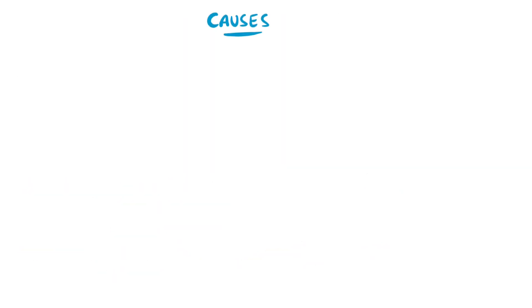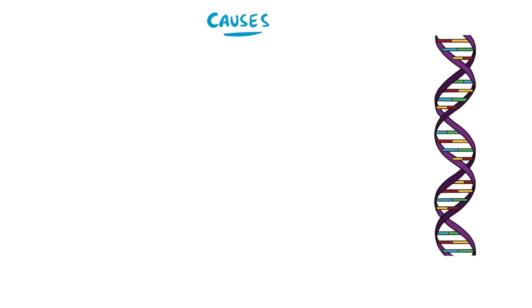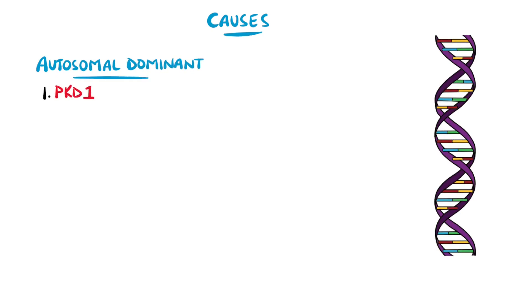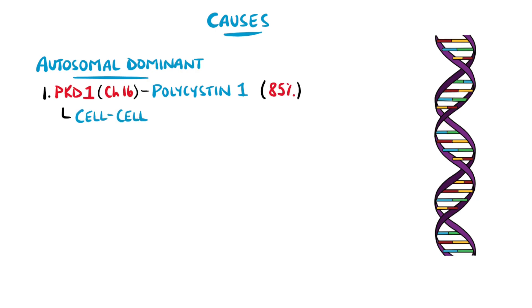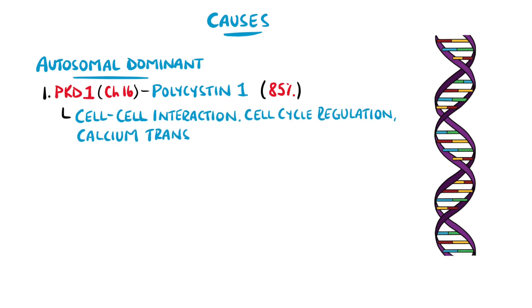There are two main types of polycystic kidney disease, both caused by genetics. The first is autosomal dominant, with two main types: one coming from mutations in PKD1 on chromosome 16, which codes for the protein polycystin 1. This is affected in around 85% of cases, and is involved in cell-to-cell or cell-matrix interaction, cell cycle regulation, and calcium transport.